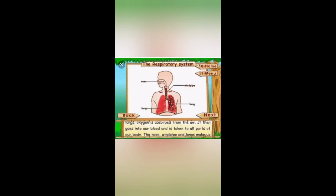The next topic we have is the respiratory system. This is the most important organ system in the human body because in order to live or survive we have to breathe in and breathe out. Breathing in and breathing out is called respiration, and the respiratory system consists of the nose, windpipe and lungs.